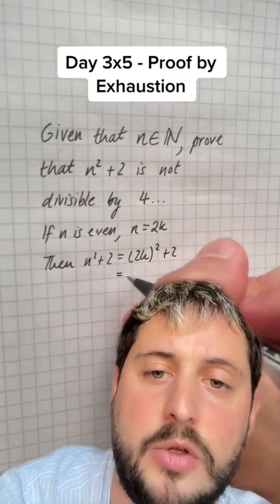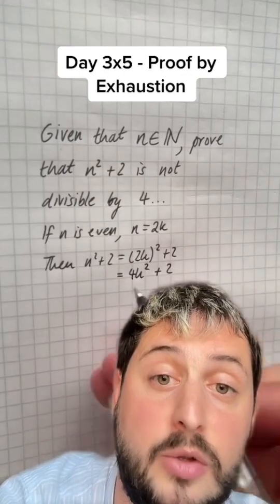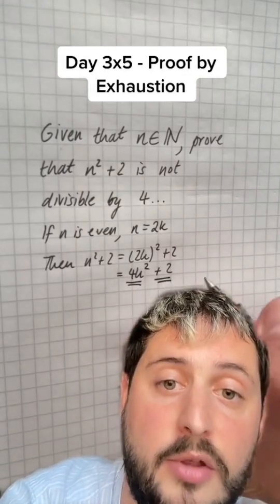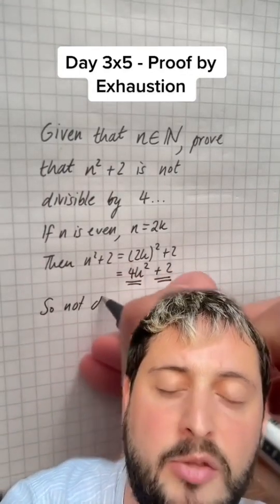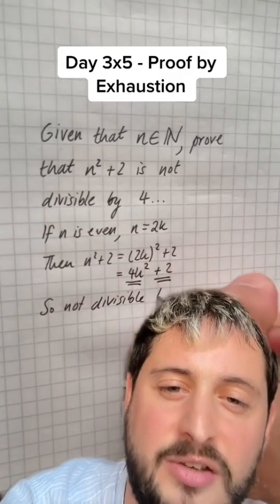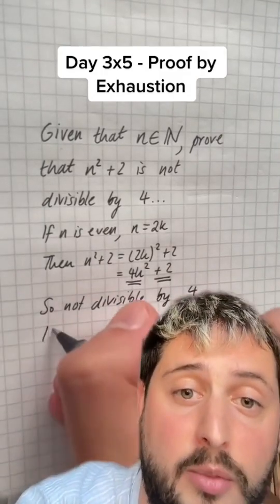So if n is even, n can be rewritten as 2k, meaning that n squared plus 2 would be 2k squared plus 2, which is 4k squared plus 2. Now the 4k squared bit must be a multiple of 4 because it's being multiplied by 4, but adding 2 to it means it's no longer a multiple of 4, so it's not divisible by 4.